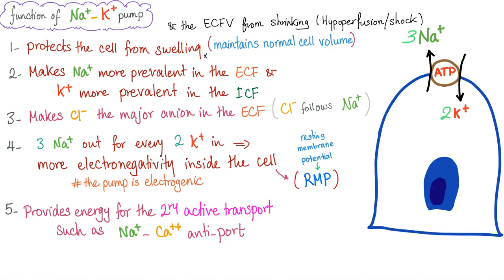Sodium is now more prevalent in the ECF and potassium is more prevalent in the ICF. When sodium (positive) is pushed out, chloride (negative) follows — that's why chloride is more prevalent outside the cell. Pushing three sodiums out and two potassiums in means more positive pushed out, which is equivalent to more negative inside, increasing the electronegativity inside the cell. That's why the resting membrane potential is negative. This pump, being primary, can provide energy for secondary active transport. Whenever you see antiport, countertransport, or exchanger, it's secondary; whenever you see ATPase, it's primary.